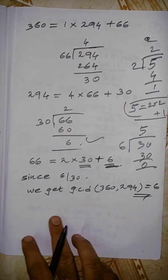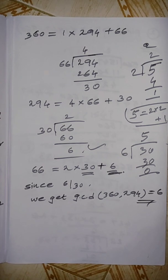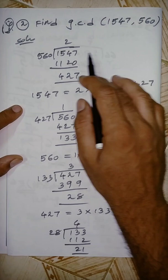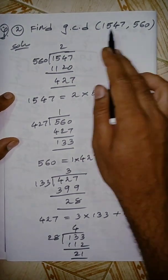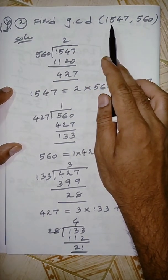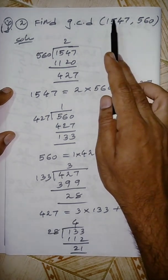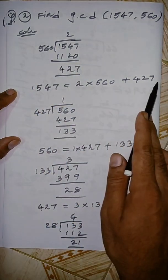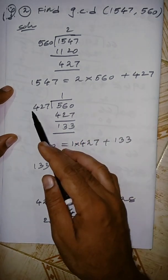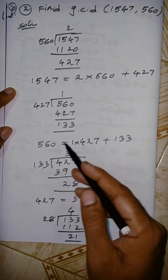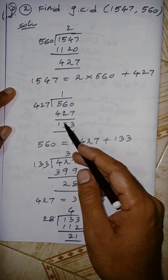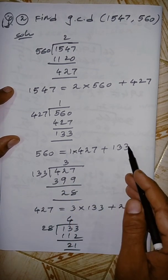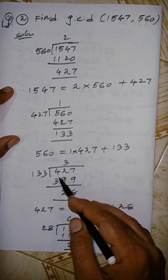Next problem: find GCD(1547, 560). Since 1547 is larger, divide 1547 by 560: 2×560 = 1120, remainder 427, so 1547 = 2×560 + 427. Next divide 560 by 427: 1×427 = 427, remainder 133, so 560 = 1×427 + 133. Then divide 427 by 133: 3×133 = 399, remainder 28, so 427 = 3×133 + 28.